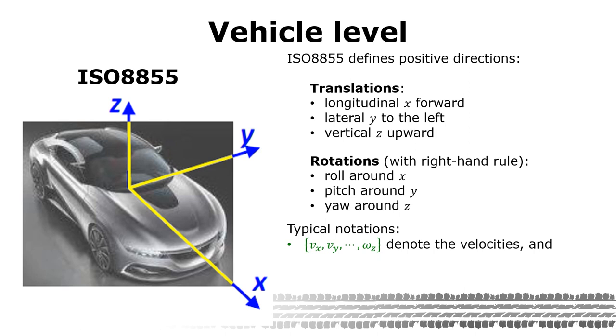Translational velocities are denoted v and rotational are denoted omega. The translational velocities are defined for a certain reference point which often is the center of gravity or a point at ground directly under front axle. Forces and moments are denoted F and M respectively.